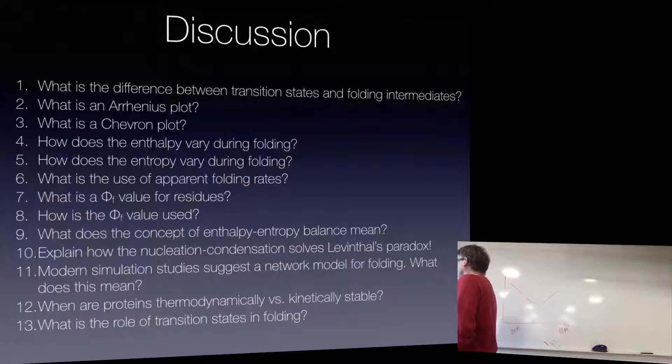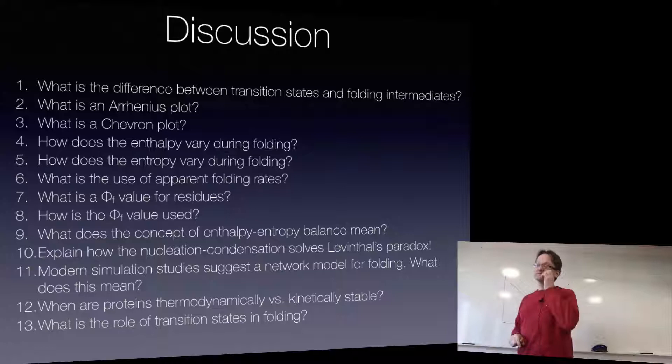Then I spoke about network models for folding. What is different with the network models for folding compared to the stuff both the book and I have talked about before? Is there anything you can actually explain about Leventhal's paradox?